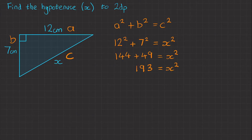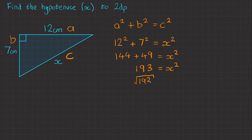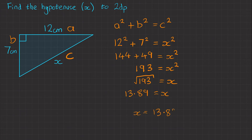We want to find x on its own, so we need to do the inverse function of squaring, which is square rooting both sides. So the square root of 193 equals x. You're going to want to pop that into your calculator, and you'll end up with 13.89 equals x. So our final answer is x equals 13.89 centimeters to two decimal places.